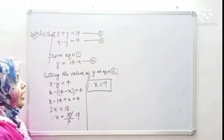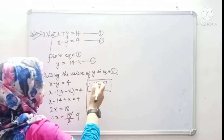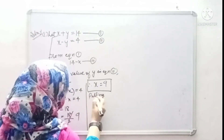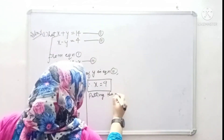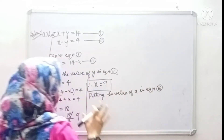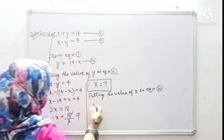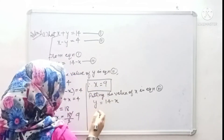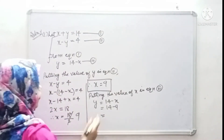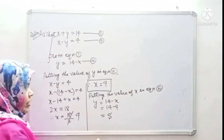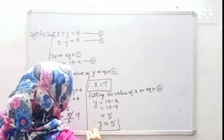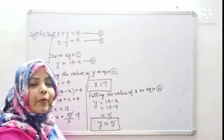Now we have to find the value of y. Putting the value of x into equation 3 — y equals to 14 minus x, and x equals to 9 — so y equals to 14 minus 9, which gives y equals to 5. Therefore x equals to 9 and y equals to 5. I hope you understood.